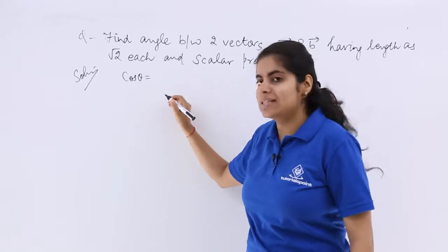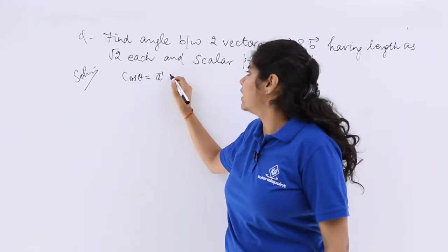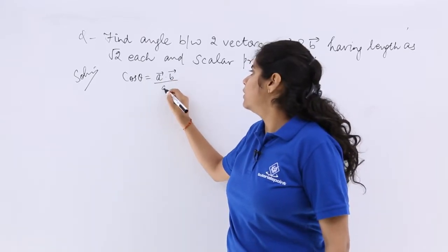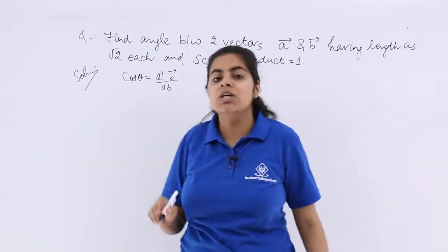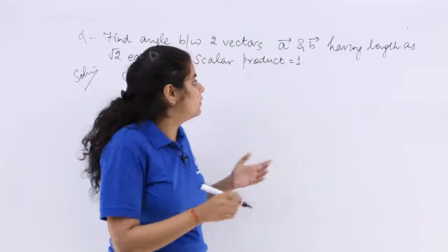Angle between two vectors, if two vectors are a and b, so cos θ is a dot b upon |a||b|, right? So what is a dot b like? We have to see.